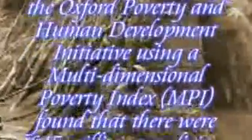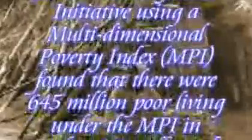A study by the Oxford Poverty and Human Development Initiative using a multi-dimensional poverty index found that there were 645 million people living under the MPI in India, 421 million of whom are concentrated in 8 North India and East India states of Bihar, Chhattisgarh, Jharkhand, Madhya Pradesh, Orissa, Rajasthan, Uttar Pradesh, and West Bengal. This number is higher than the 410 million poor living in the 26 poorest African nations.